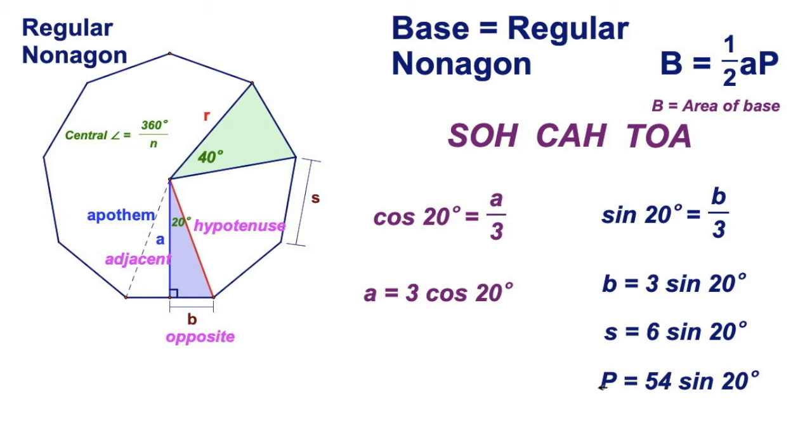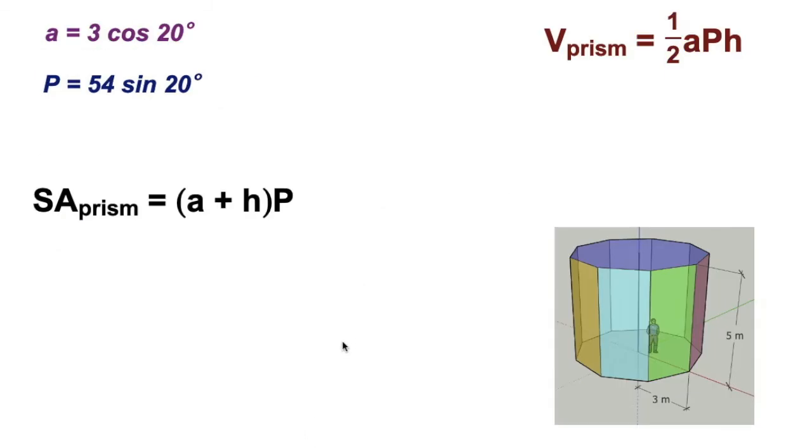So I can represent the perimeter as 54 times the sine of 20 degrees. And this is all we need to calculate both the surface area and the volume. Remember, we only had two measurements going into this. We had the radius and we had the height. So let's go ahead and substitute these. We've got the radius of three meters, a height of five meters.